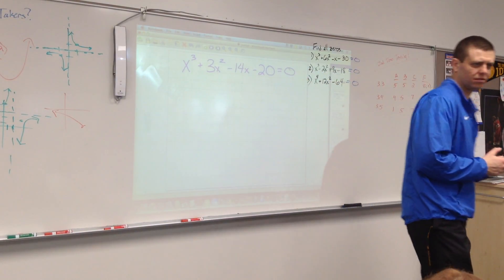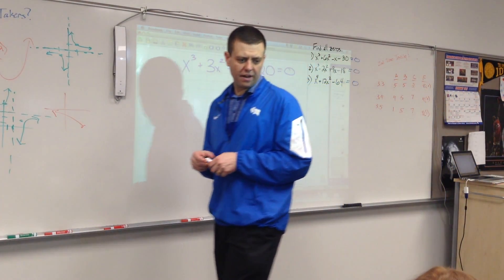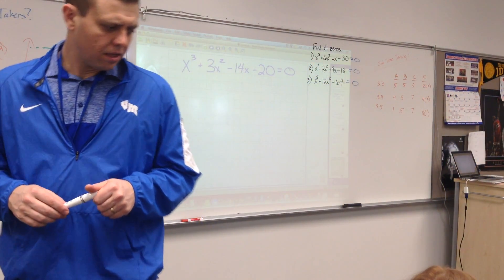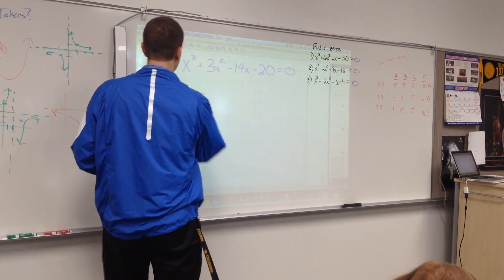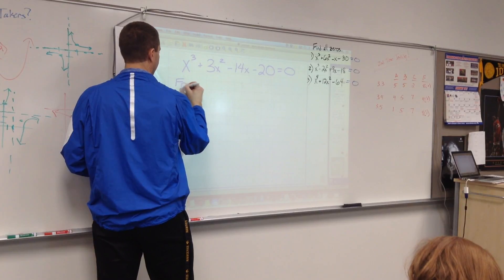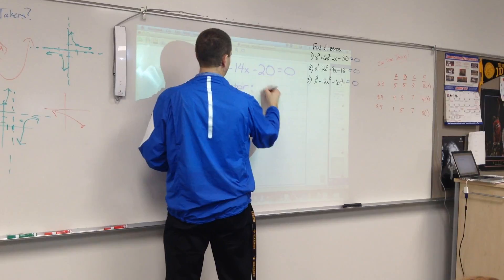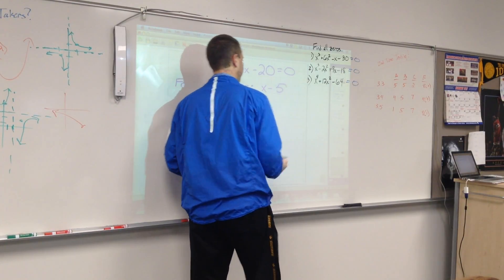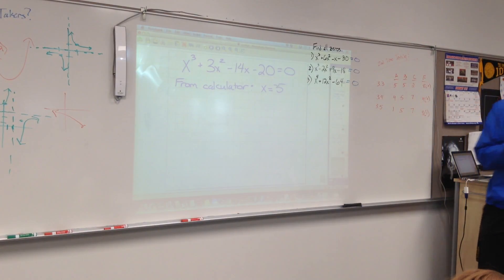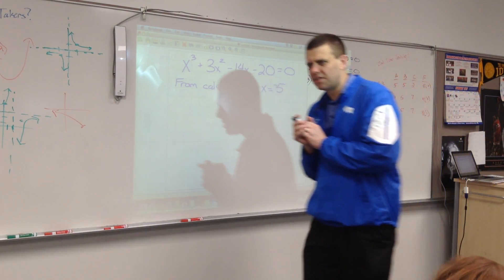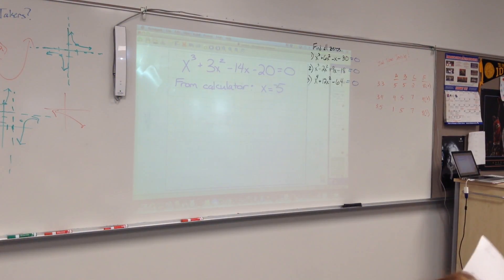Did you find any zeros? Negative five. Anybody agree? Negative five. So we know from our calculator we found x equals negative five is one of our zeros. There are a couple other zeros, but they're long decimals. We want to know what they are exactly — we don't want the rounded decimals.